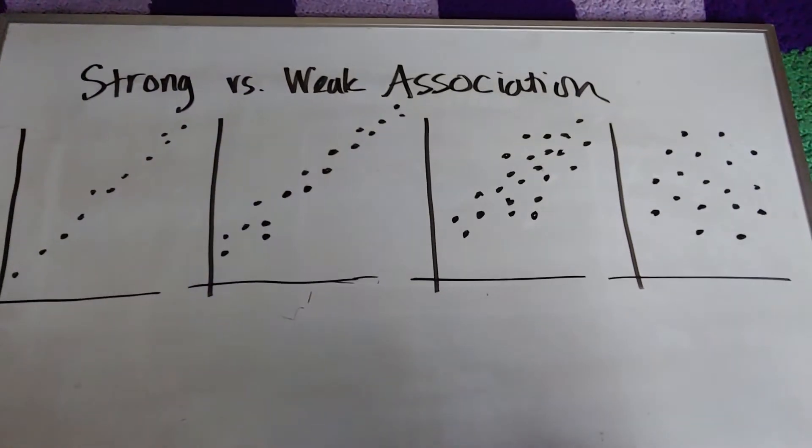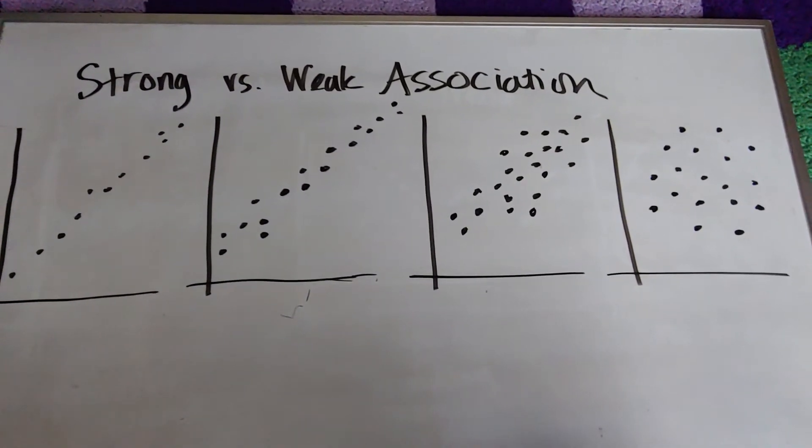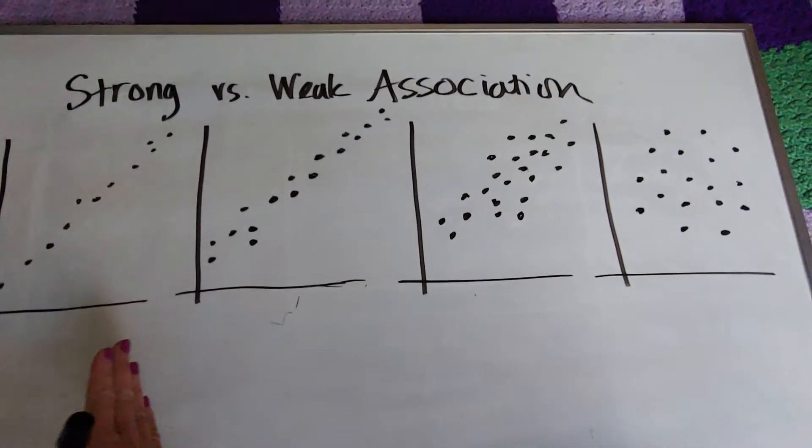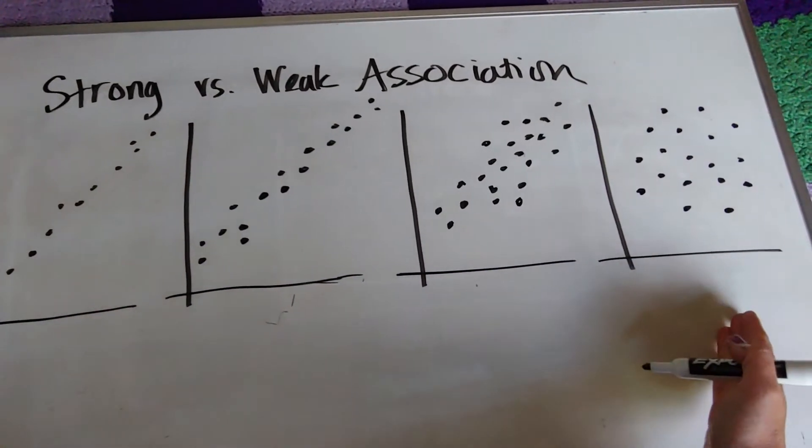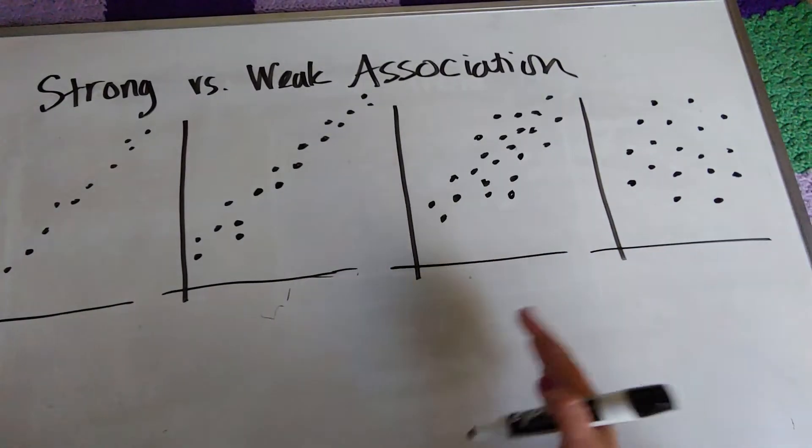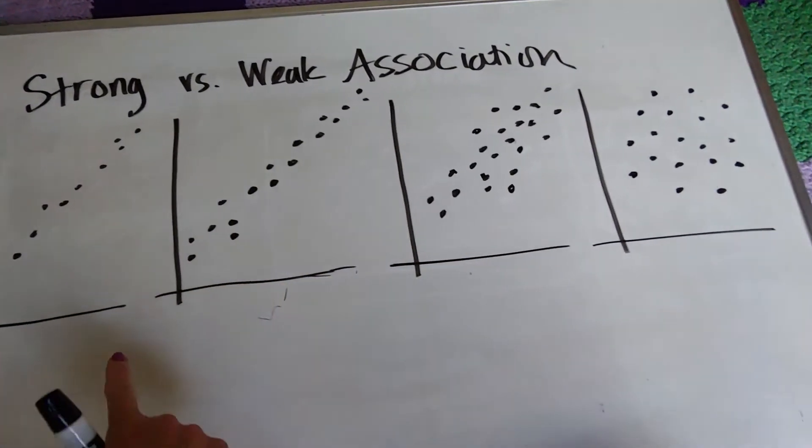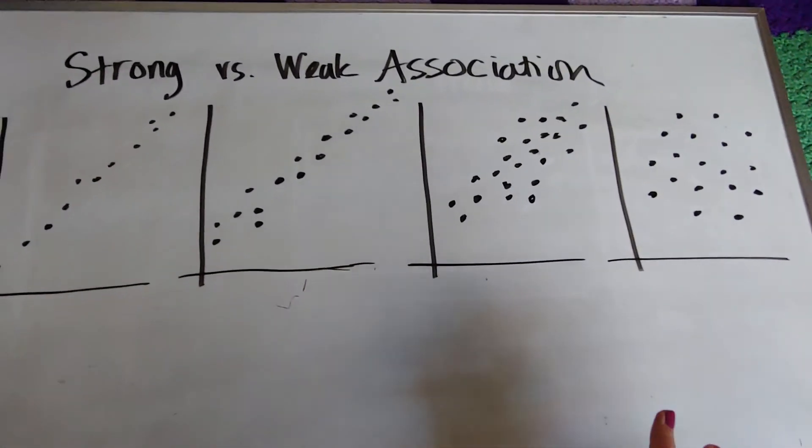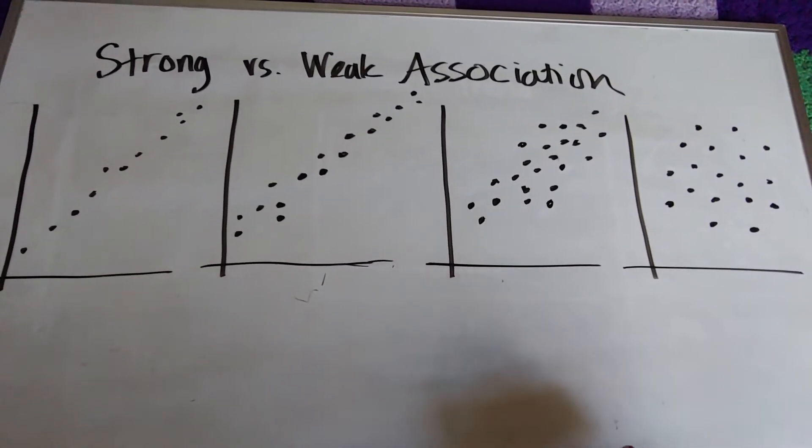All right, in this video we're going to talk about strong versus weak association as we look at scatter plots. So what I've done is I have made up four pictures that are all, well, three of them are trending up. If you watched our last video, the last one really has no trend, but I want to talk about how strong or weak the association is.